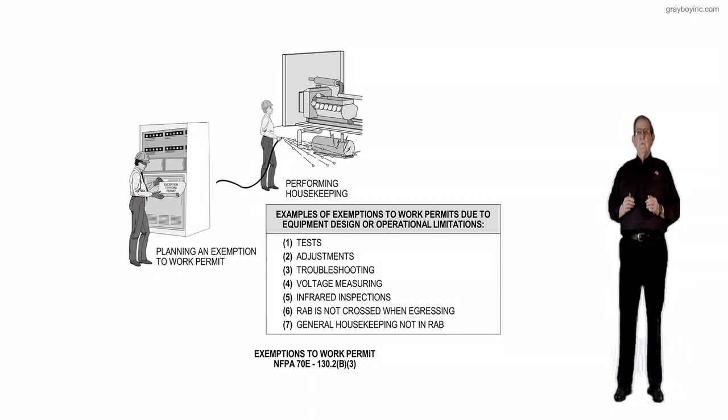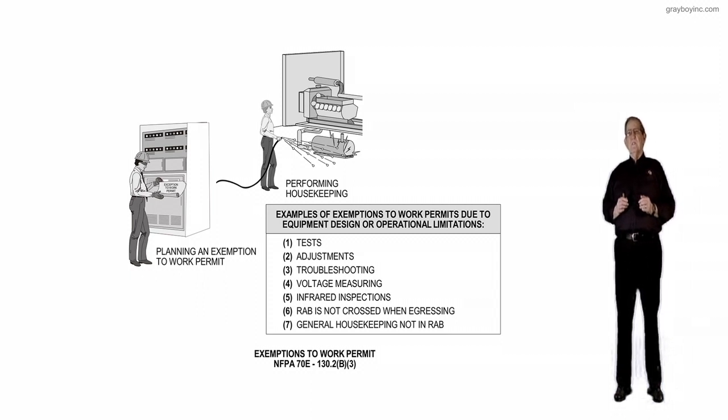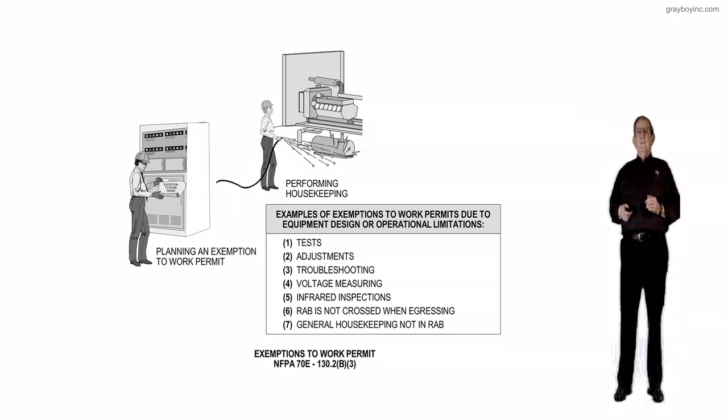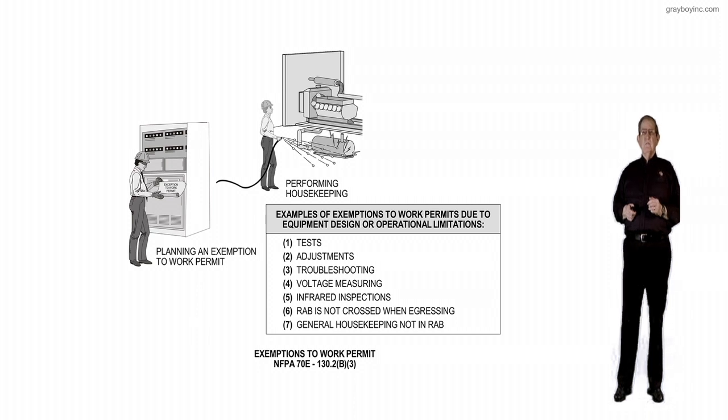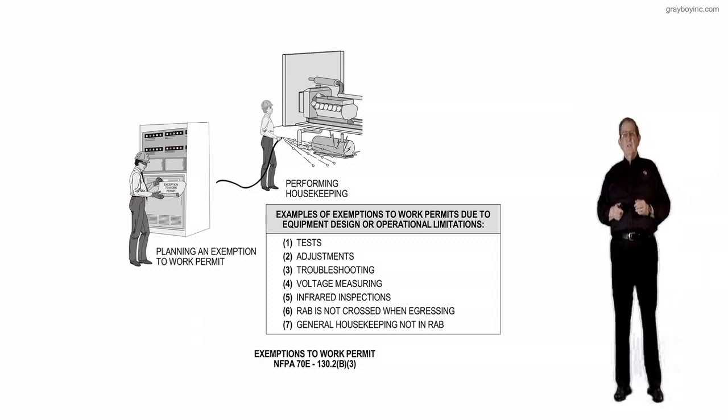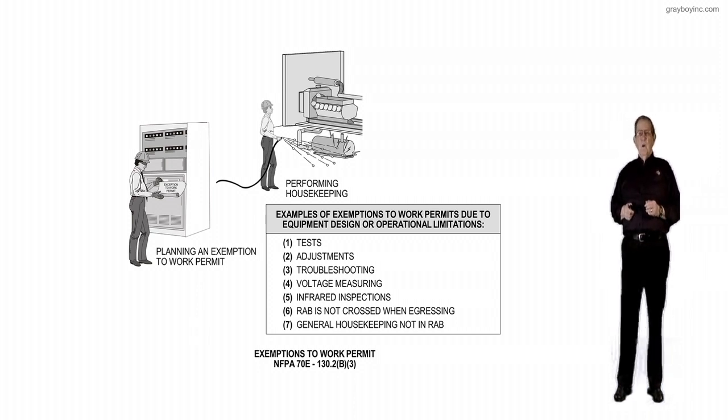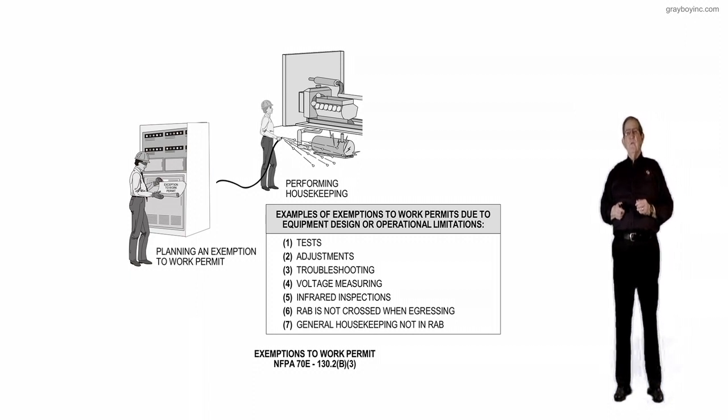Items 1 through 7 give examples where a work permit would not be required. Number one, test. Number two, adjustments. Number three, troubleshooting. Number four, voltage measuring. Number five, infrared inspections.